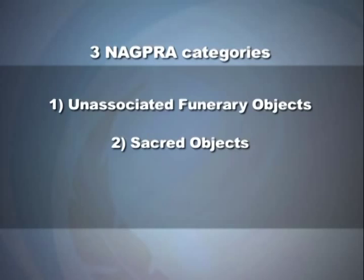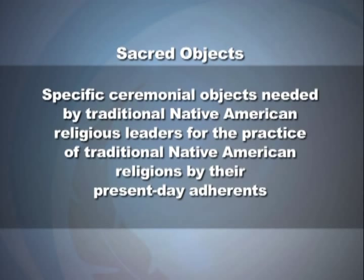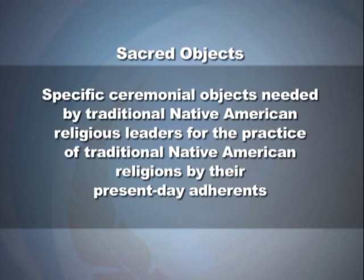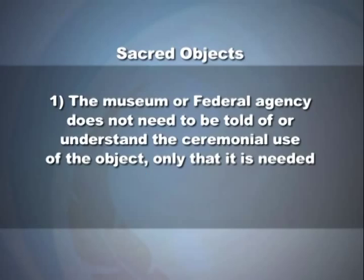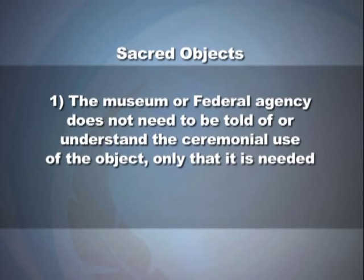The second category is sacred objects — specific ceremonial objects needed by traditional Native American religious leaders for the practice of traditional Native American religions by their present-day adherents. Sacred objects can be pipes, medicine pouches, clothing like vestments, or other objects, and can be owned by a tribe or a single individual. Two important points: the museum or federal agency does not need to understand the ceremonial use, only that it is needed; and the ceremony may have been dormant due to the loss of the object, but may be renewed upon its return.